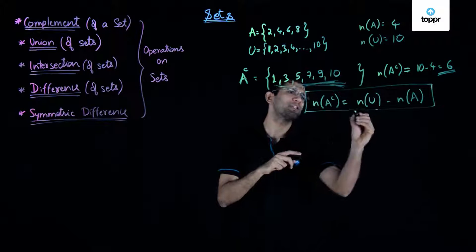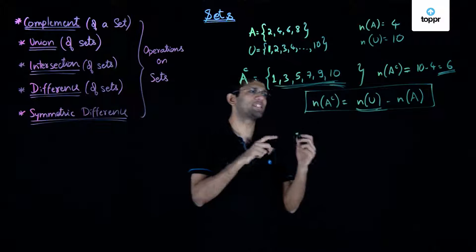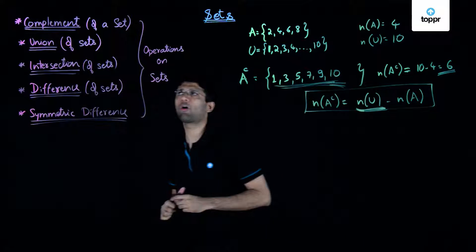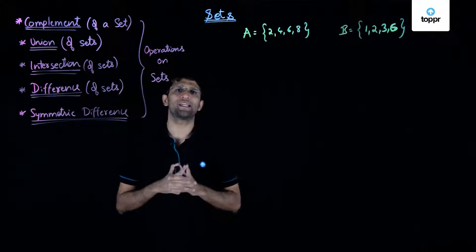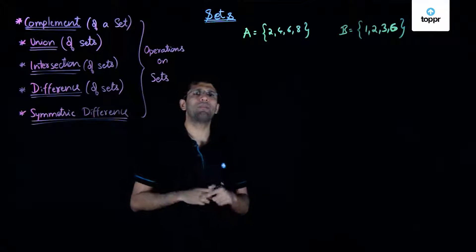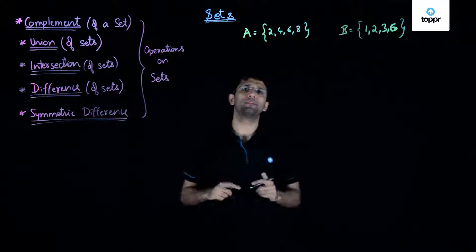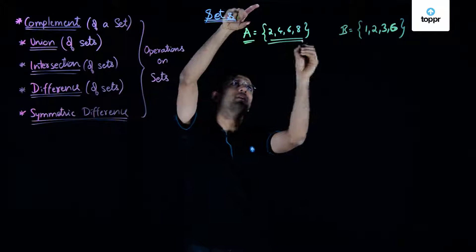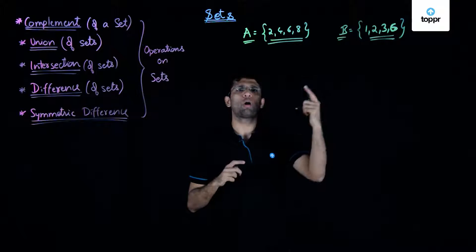This formula is valid so long as the universal set is not an infinite set. For cases where the universal set is infinite, this does not hold. So now we've seen what is meant by complement of a given set. Let us now look at the next operation on sets, known as union of sets. Union of sets is the set formed by taking all the elements out of the two sets and discarding the common elements.